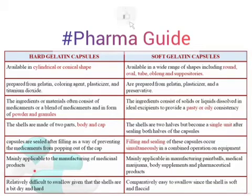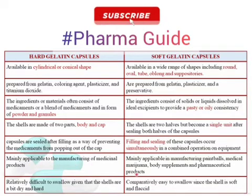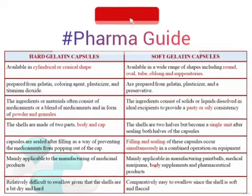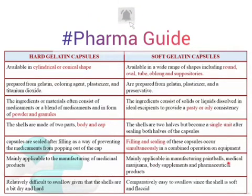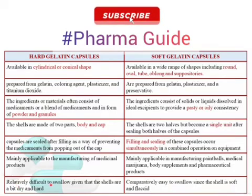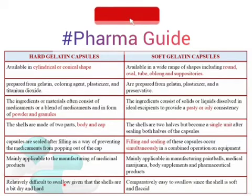Hard gelatin capsules are mainly applicable in the manufacturing of medicinal products, whereas soft gelatin capsules are used in the manufacturing of paint balls, medicinal marijuana, body supplements like vitamins, and pharmaceutical products. Hard gelatin capsules are relatively difficult to swallow compared to soft gelatin capsules.